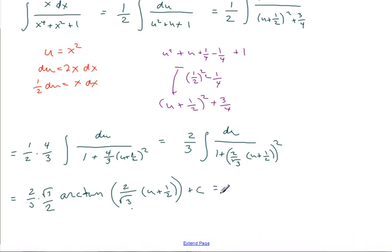So, let's simplify that to square root 3 over 3. I'll keep it in the denominator rationalized. Arctan of 2 over square root 3 times x squared plus 1 half plus c. And there we have it.